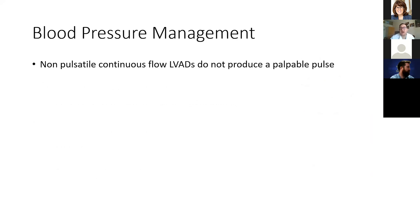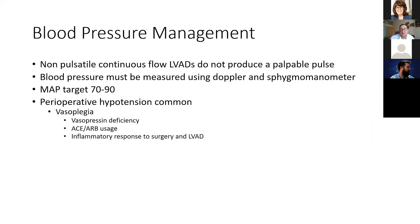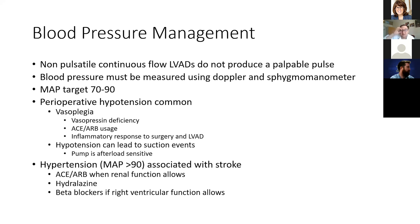Blood pressure management is important. Non-pulsatile VADs make standard automated cuffs unreliable — you may need to use a sphygmomanometer and Doppler to obtain a mean arterial pressure. We target a MAP of 70 to 90 mmHg. Hypotension is very common early for a variety of reasons including vasopressin deficiency with heart failure and medication-induced vasoplegia, and it must be treated because these pumps are afterload sensitive — hypotension will cause ventricular emptying and suction events. Conversely, a MAP greater than 90 has been associated with lower pump flow and a higher risk of stroke in patients with non-pulsatile pumps.